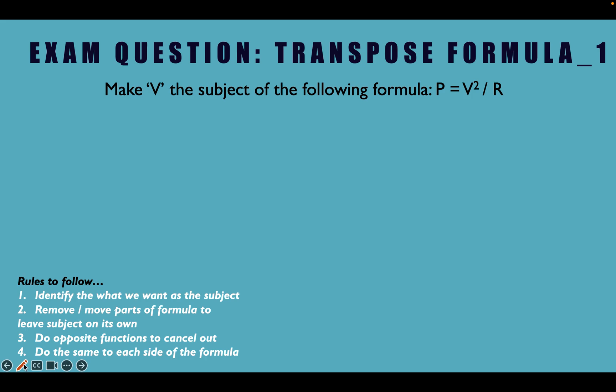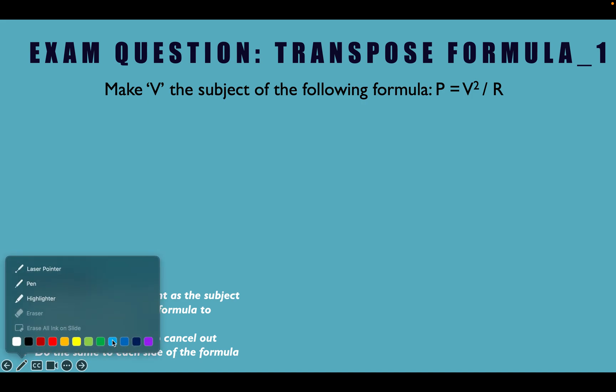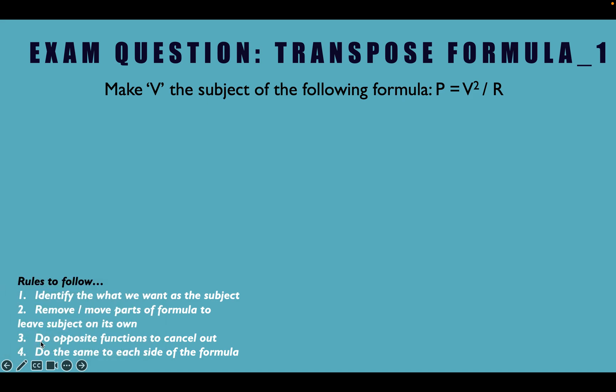So we may be asked in an exam to transpose a formula and make something the subject of the formula. What does that mean? Currently the subject of this formula up here is the P, isn't it? Because it's P equals V squared divided by R.